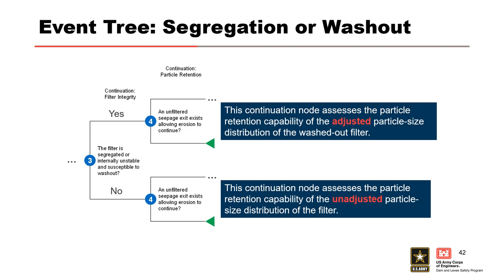This slide illustrates how the generic event tree can be adapted if the filter is susceptible to segregation or is internally unstable. In this example, a node was added to assess the likelihood of the filter being segregated or internally unstable. Given the filter is susceptible to segregation or internal instability, the next node assesses the likelihood of continuation based on the adjusted gradation. Given that the filter is not susceptible, the complementary next node assesses the likelihood of continuation for the stable filter and its unadjusted gradation.